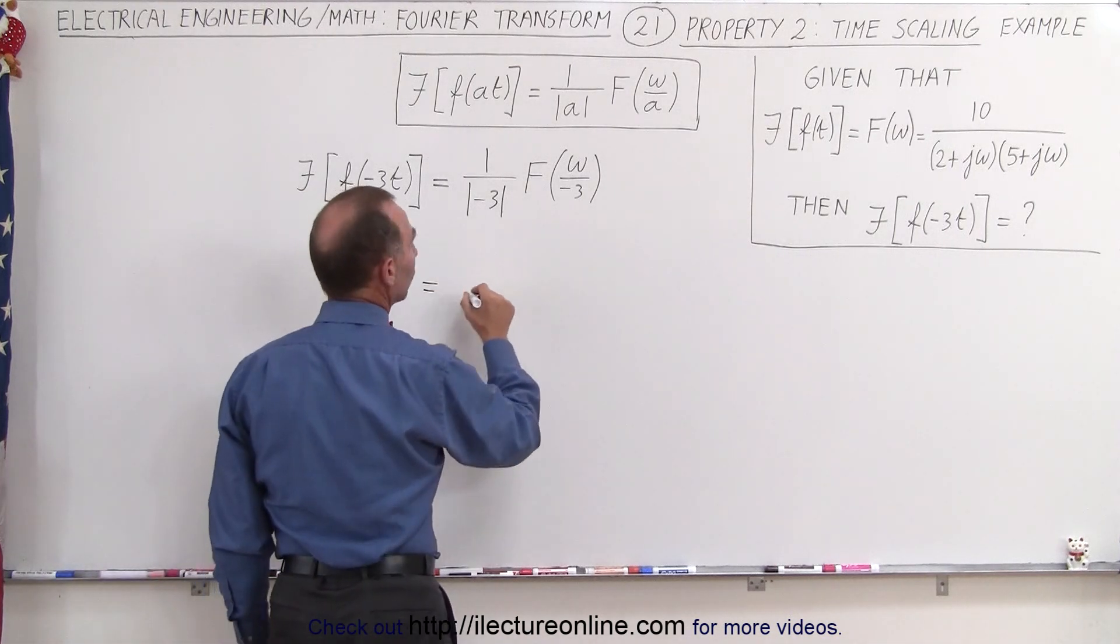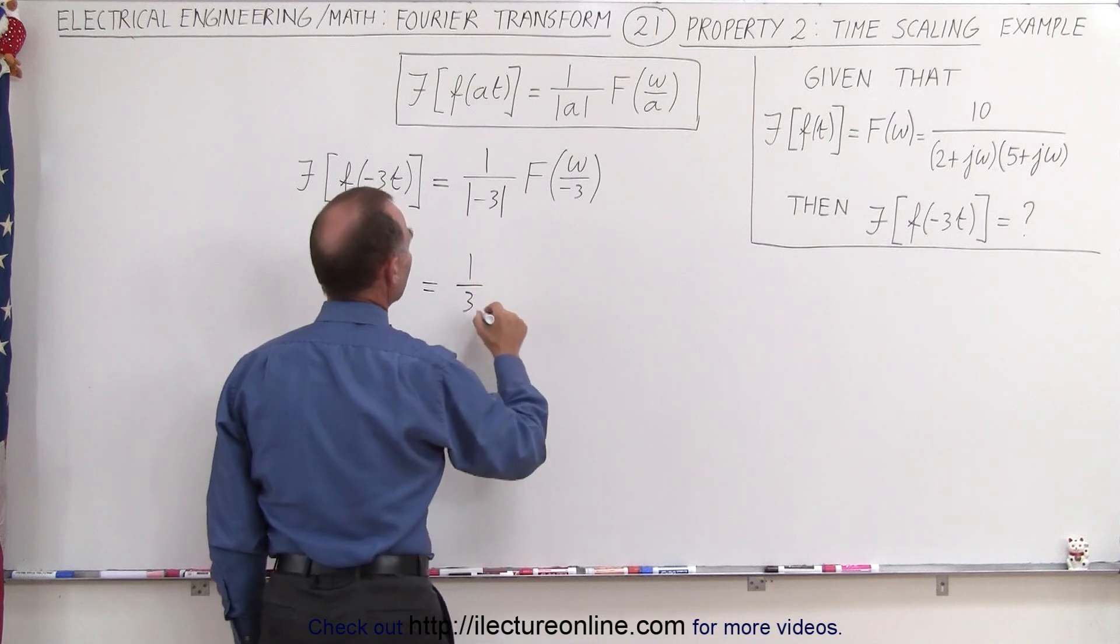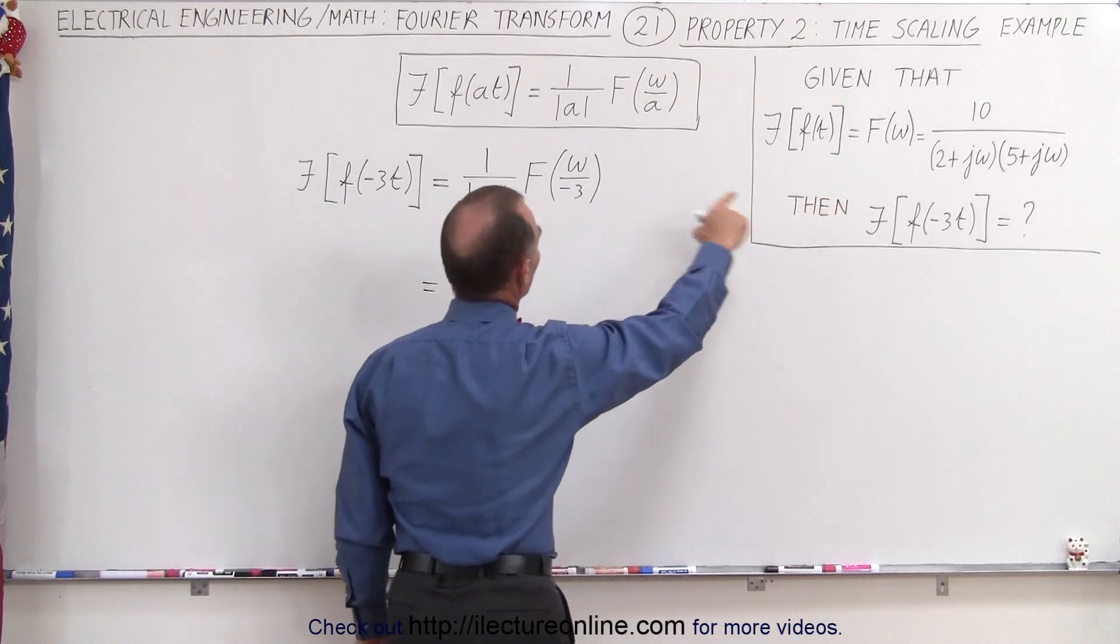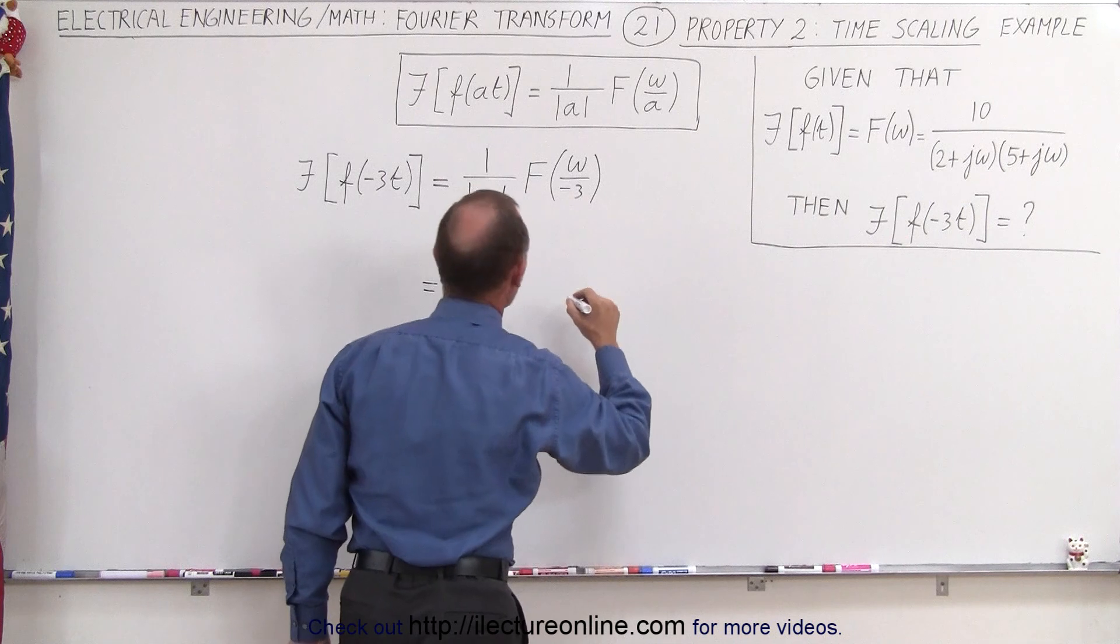So this will become equal to 1 over 3 times the Fourier transform with every omega replaced by that. So let's go ahead and do that.